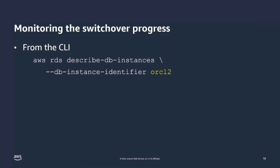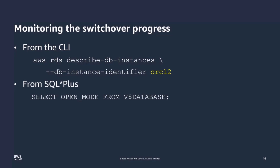We just saw how to do this from the console. You can also monitor the entire switchover progress using the CLI. There is a describe DB instance command that shows the status of the environment as it's being switched over, including both changing from source to replica and from replica back to source. And of course, as we saw, you can also use SQL Plus to run a select open mode from the database to see that the database is in read-write mode.